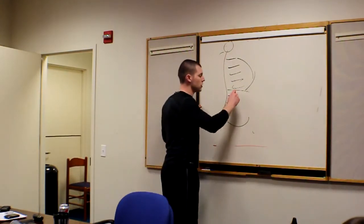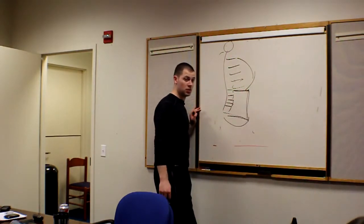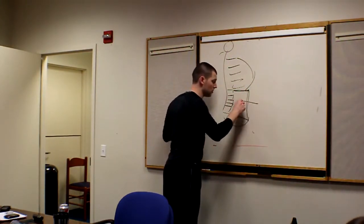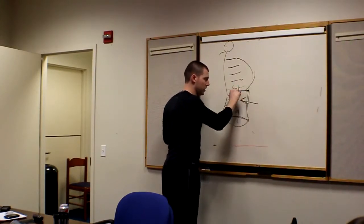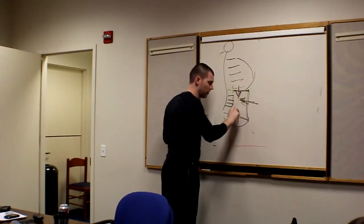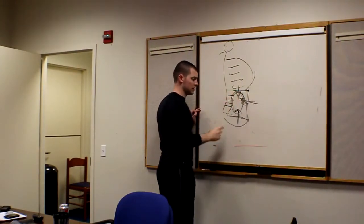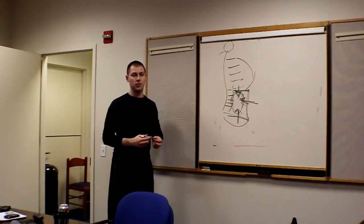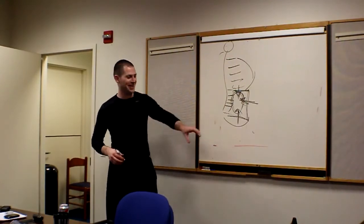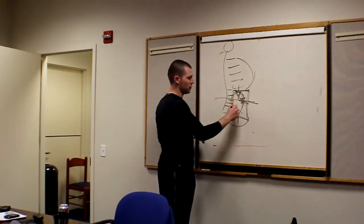So the whole function of the intrinsic stabilization subsystem is to make up for the rib cage. It increases intra-abdominal pressure, right? Diaphragm, TVA, pelvic floor, and basically makes this a stable little column of fluids and organs. It resists anterior shear force.